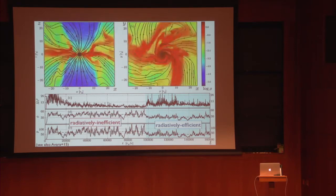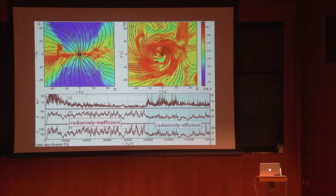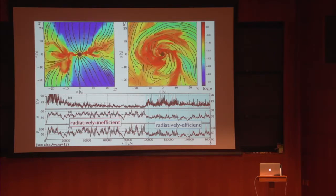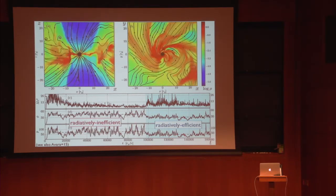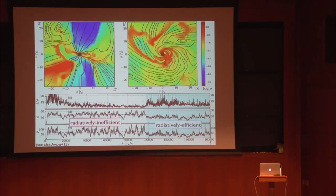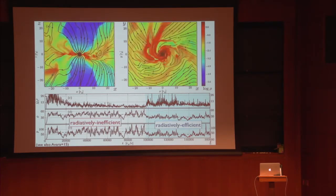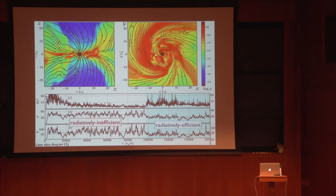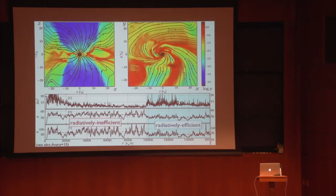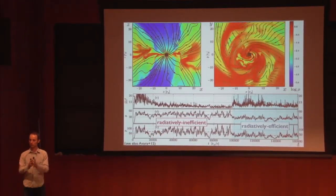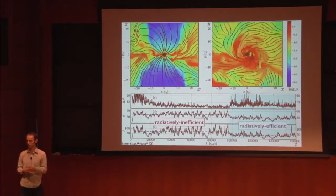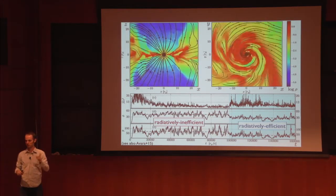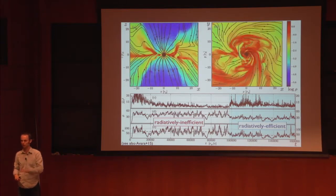Do boundary conditions in shearing boxes fix the large-scale magnetic flux? Yes, in a net-flux simulation the net flux cannot change — it's set once and for all. In the global simulation, the large-scale magnetic flux is regulated by the force balance between the jet, magnetic flux, and the black hole pushing out on the disk. If the magnetic flux becomes too strong, the disk gets pushed away and then comes back. The system regulates itself to a well-defined value of large-scale magnetic flux in steady state, determined by the ability of the accretion disk to bend magnetic field lines — marginally stable to the magnetorotational instability.